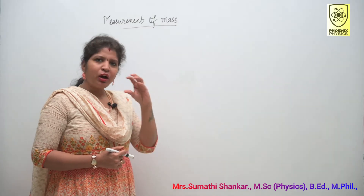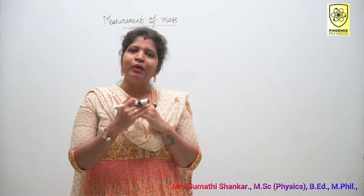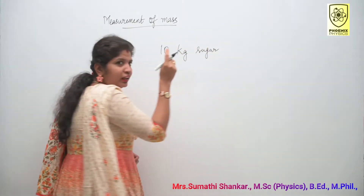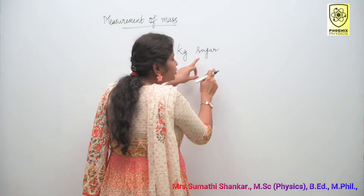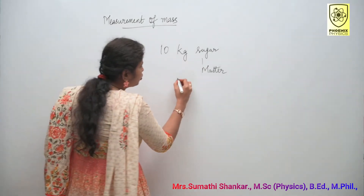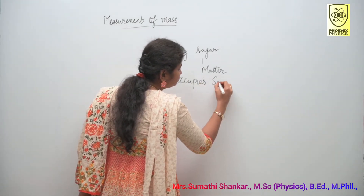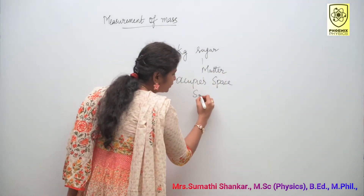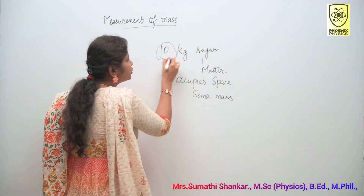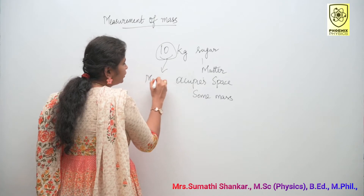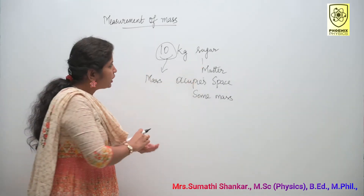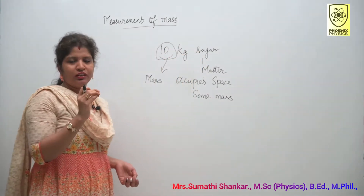What is mass? Mass of the substance is the amount of matter present in it. For example, I am having 10 kg sugar. In physics, this sugar is matter because it occupies some space and it has some mass. So we can call this sugar as matter. This 10 kg is nothing but our mass. In general, we can say mass of the substance is the amount of matter present in it.